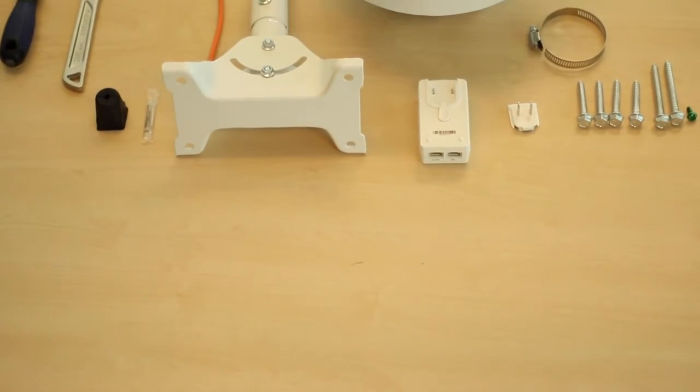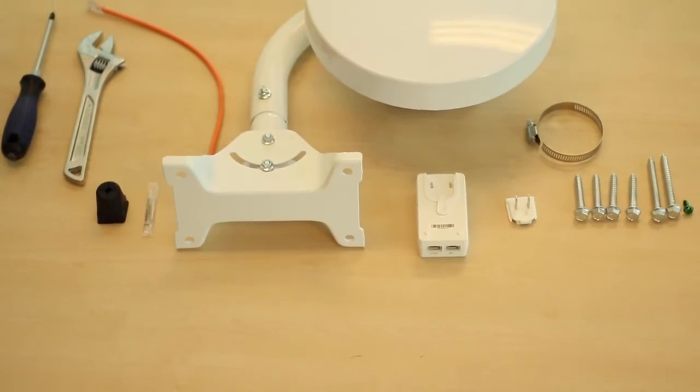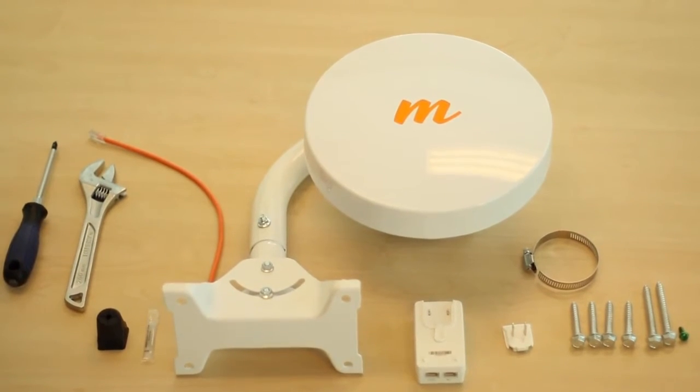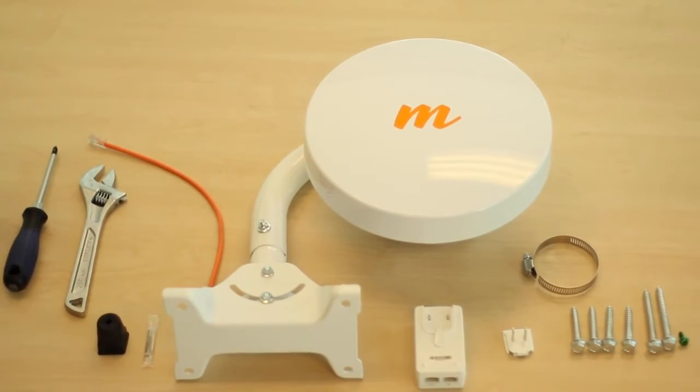The Mimosa B5 Lite radio box comes with two complete radio sets, including the cable gland, the mount, mount clamp, the power supply, and the radio itself.